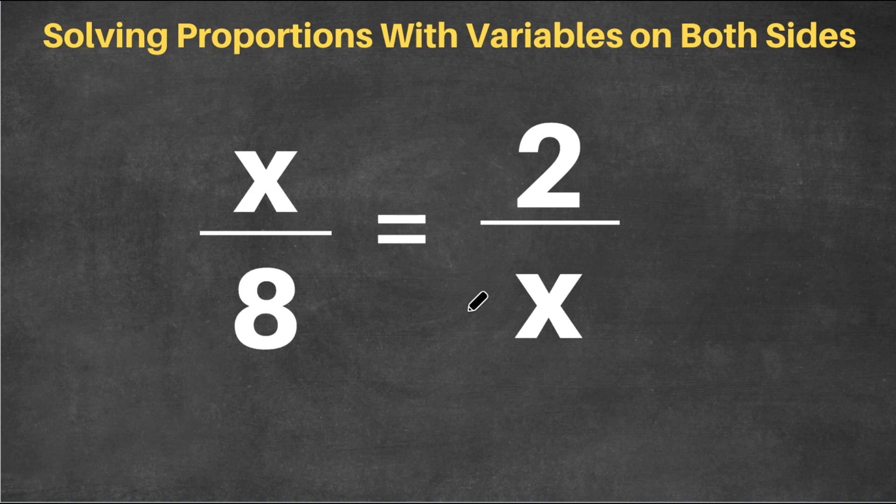To solve this proportion, we're still going to be using cross multiplication, and that's where we cross multiply our terms for our proportion. So we're going to multiply x with x and 8 with 2. x times x is x squared, and this equals 8 times 2 is 16.